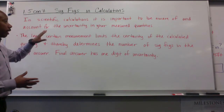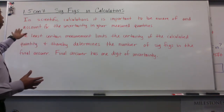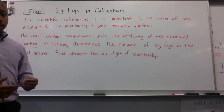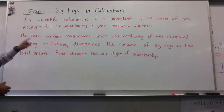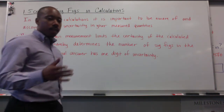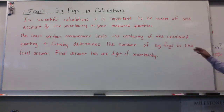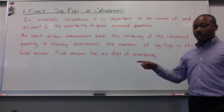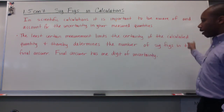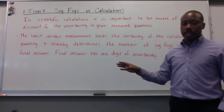In scientific calculations, it is important to be aware of and account for the uncertainty in your measured quantities. The least certain measurement limits the certainty of the calculated quantity and thereby determines the number of significant figures in that final answer.